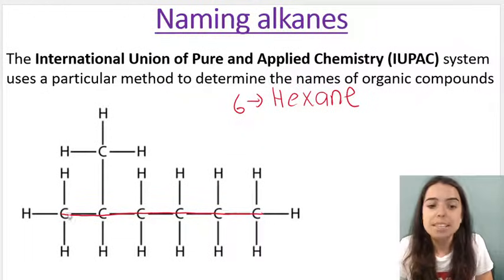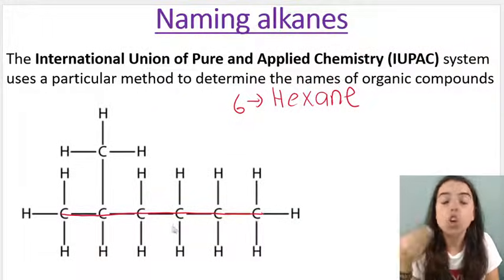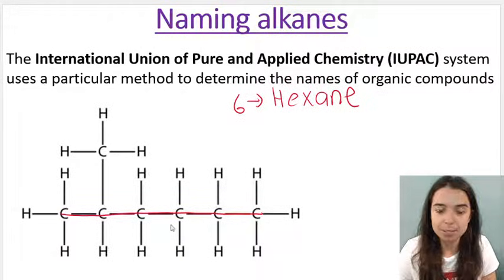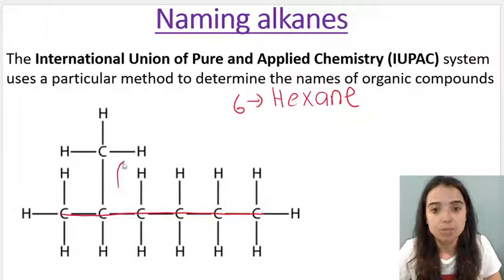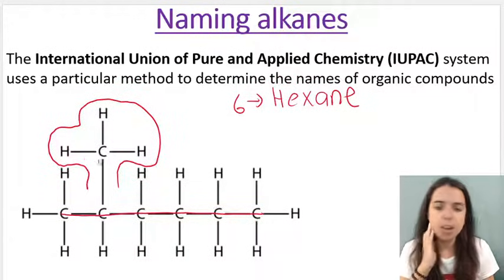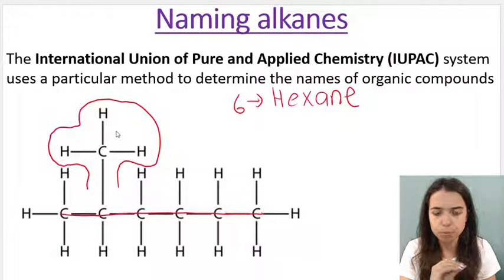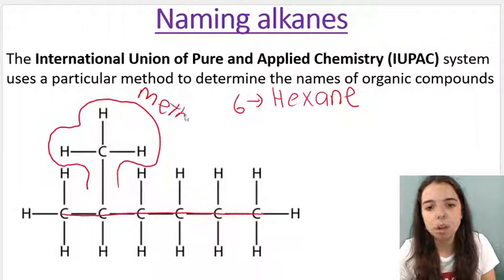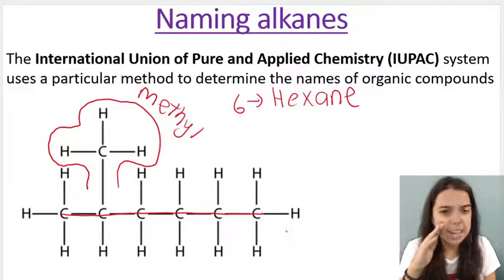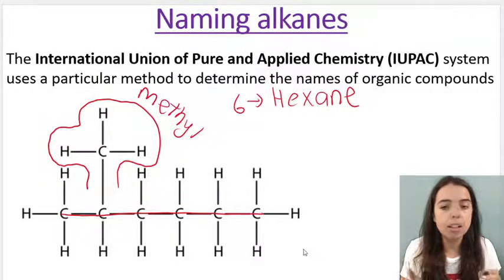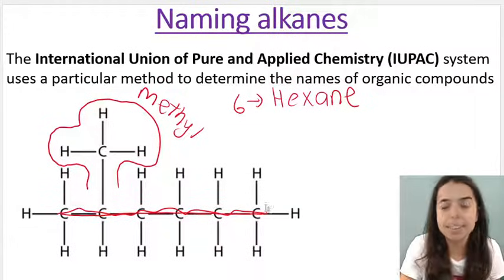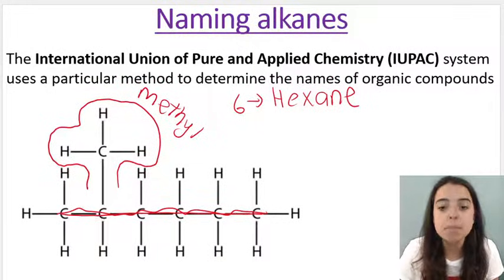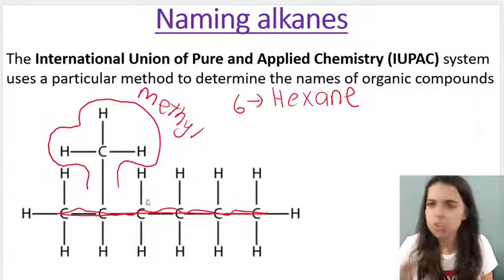Looking at this organic compound, we can see that the main chain — the longest continuous carbon chain — has six carbons, so again that gives us hexane. But we have a branch on this compound. Looking at this branch, how many carbons are in this branch? One carbon. So what is this branch's name? It is a methyl branch. You might be thinking the name is methyl hexane — but we also need to indicate the position of the branch. We number the carbons in the main chain to give the branch the lowest possible number.